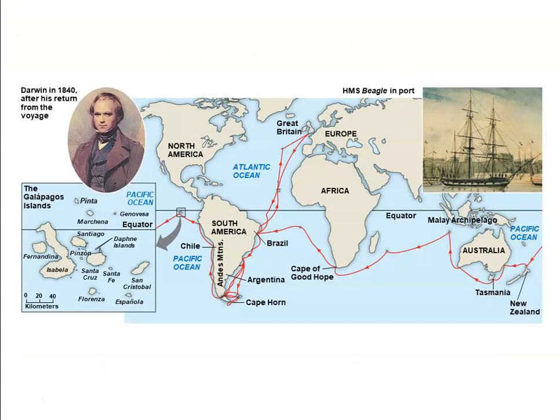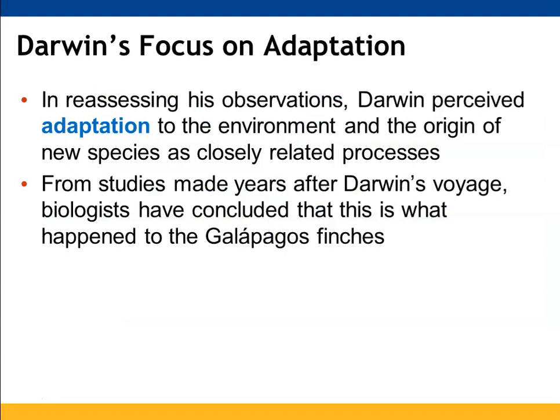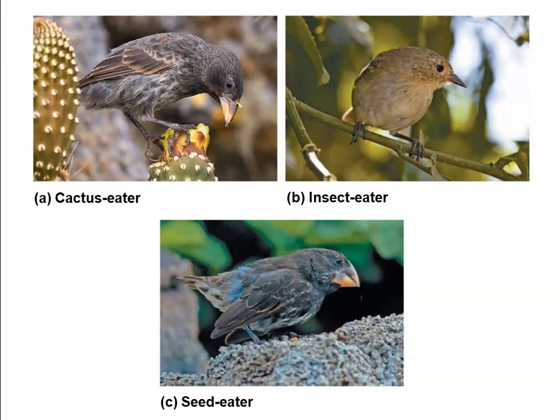You can see Darwin's travels on a map, with the Galapagos shown as a box underneath North America and northwest of South America. With all of his observations and studies in mind, he perceived adaptation to the environment and the development of new species as being closely related to one another. Biologists have now concluded that this is what must have happened with the Galapagos finches — finches with different sizes and shapes of beaks depending on their food source: cactus eaters, insect eaters, and seed eaters.